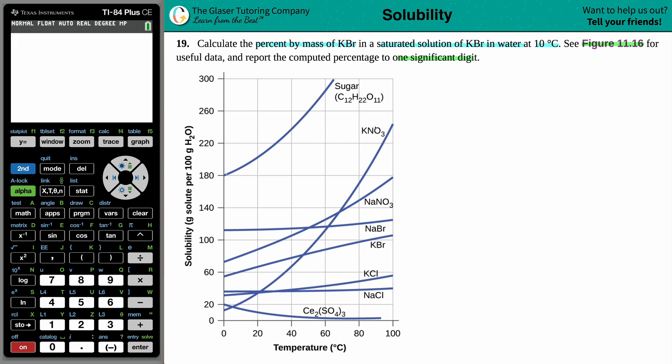So we will go into how to decipher what's going on on these charts. Now, generally speaking, the Y-axis is always going to be solubility. The amount of your solute,